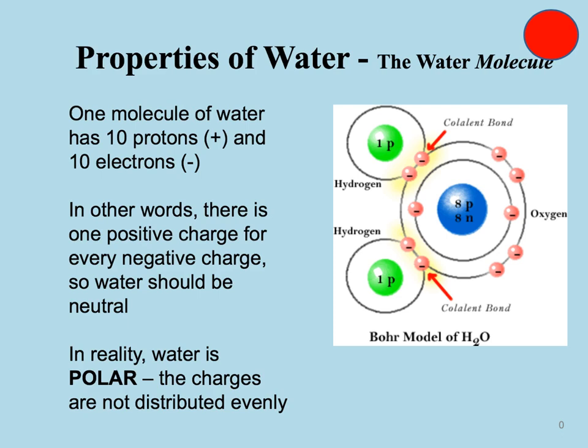If you look at the Bohr model here of a water molecule, you'll notice that hydrogen has an atomic number of one, so that tells me it has one proton and one electron. Protons are in the nucleus of the atom and electrons are floating around in the electron cloud. Hydrogen has one electron and it wants to have two in that first level, so it's either going to share an electron or gain an electron in order to fill that.